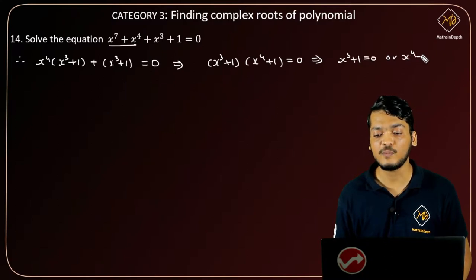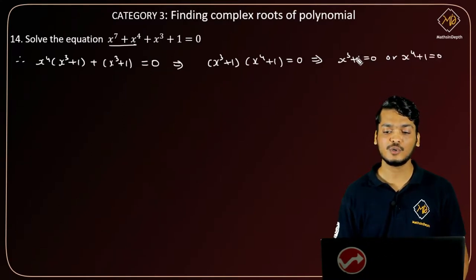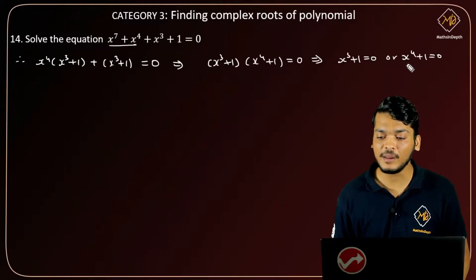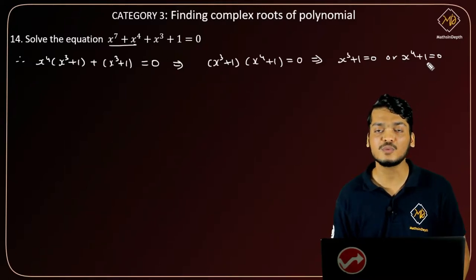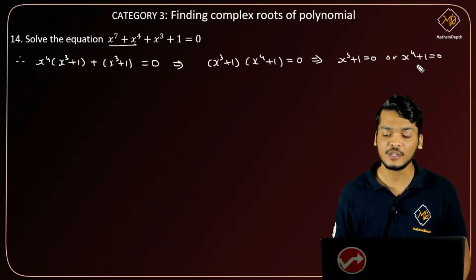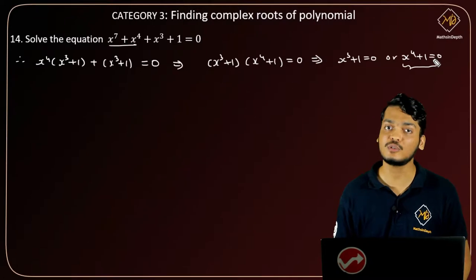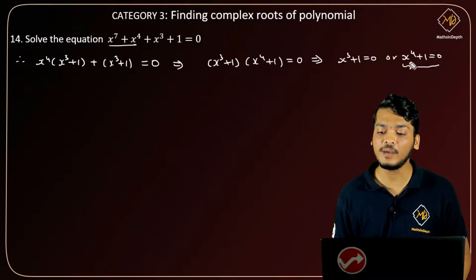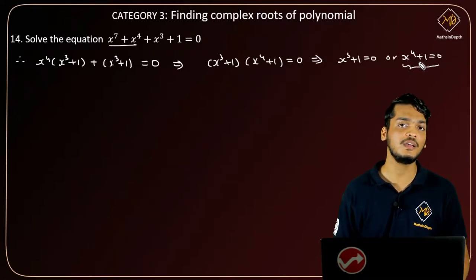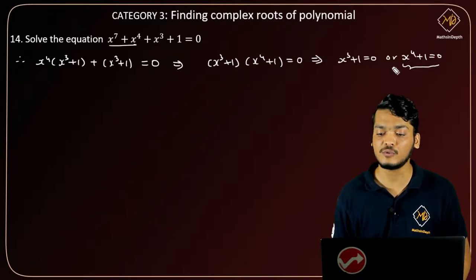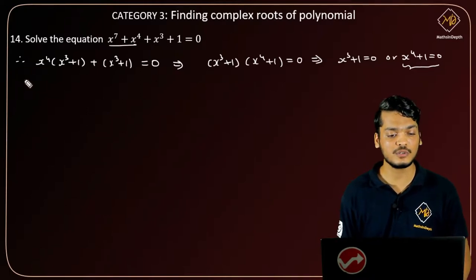This implies that either x cube plus 1 equals to 0 or x raise to 4 plus 1 equals to 0. Now in question number 13, we solved x raise to 4 plus 1 equals to 0. You can see the solution in question number 13 for what the roots of x raise to 4 equals to minus 1 were. Now we'll solve x cube plus 1 equals to 0.